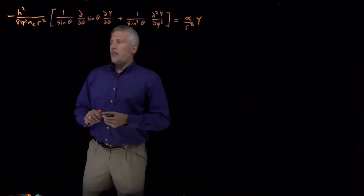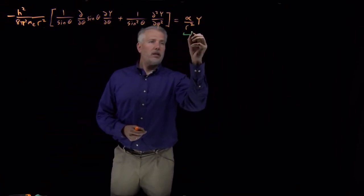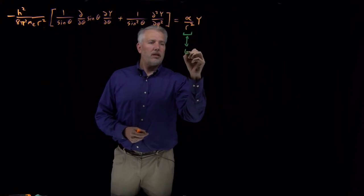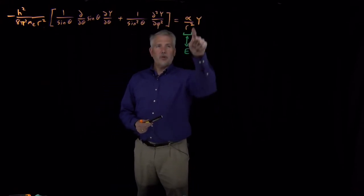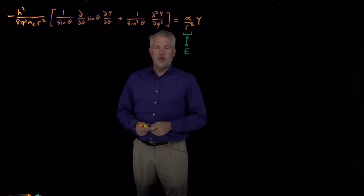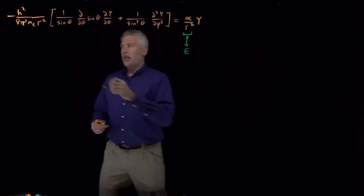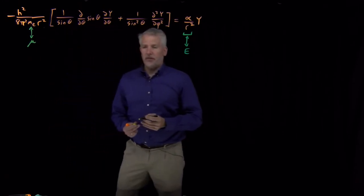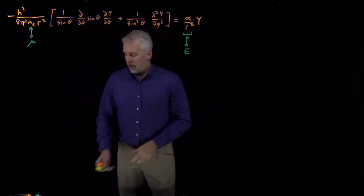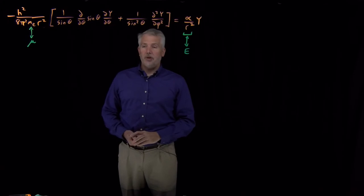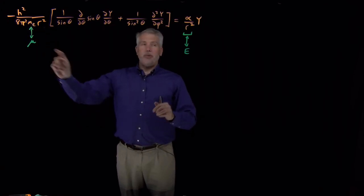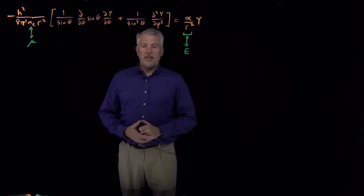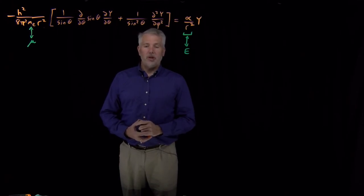If I notice that this alpha over r squared, if I identify that with the thing we called energy for the rigid rotor, and if I replace the mass of an electron with the reduced mass for a diatomic molecule, if I replace M with mu, and if I replace alpha over r squared with E, that's exactly the same thing as the differential equation we solved when we were solving for the rigid rotor wave function.